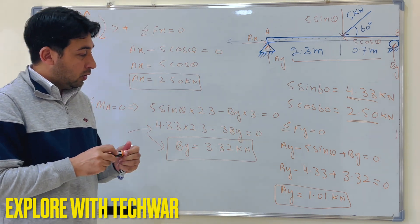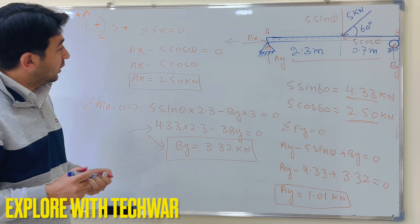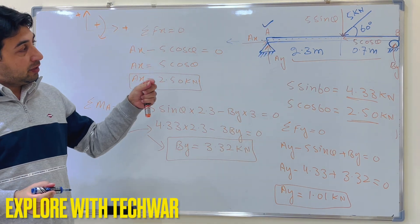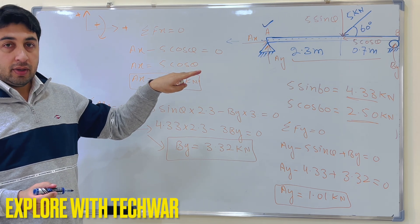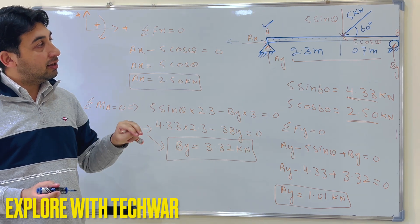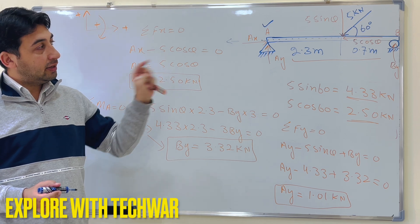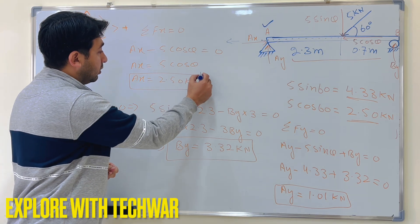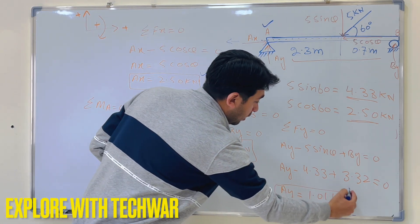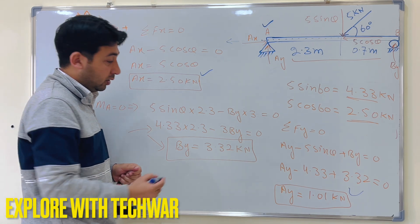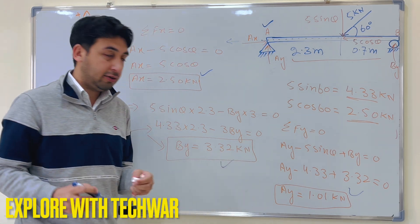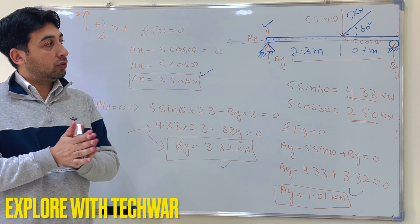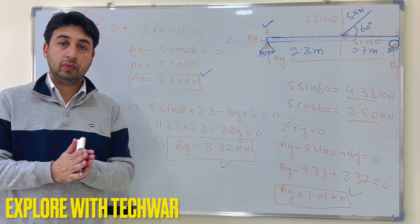Solving that equation gives Ay equal to 1.01 kilonewtons. So the unknown reaction forces for the simply supported beam with a 5 kilonewton axial load at 60 degrees are: Ax equals 2.5 kN, Ay equals 1.01 kN, and By equals 3.32 kN. This is how we find the reaction forces at the supports due to an axial load.